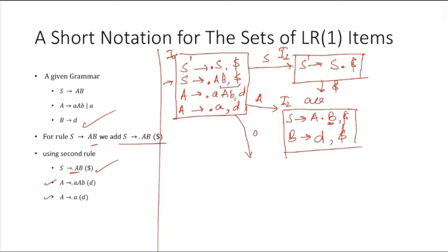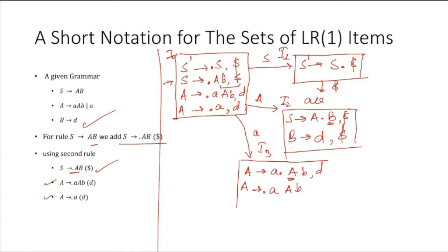Then after the dot, small-a is there, so for small-a we take another move to get I3. In I3 we have A to small-a dot capital-A B, with lookahead D. We also add production rules A to dot capital-A B with lookahead B, and A to dot A with lookahead B.